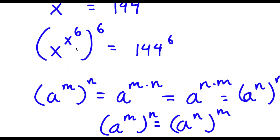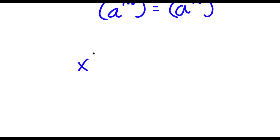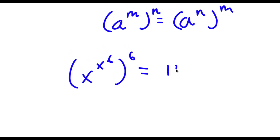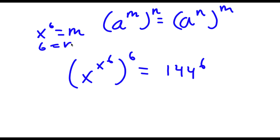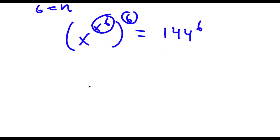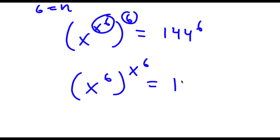So in this case I have x to the power of x to the power of 6 to the power of 6. We can think of x to the power of 6 as m and 6 as n, so I'm going to switch these two places. Now I have x to the power of 6 to the power of x to the power of 6, is equal to 144 to the power of 6.